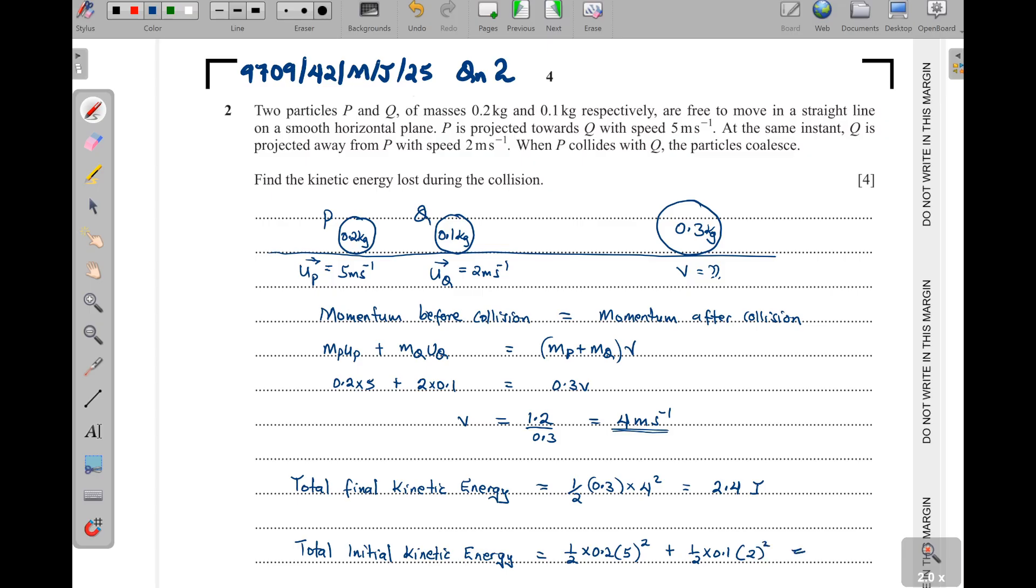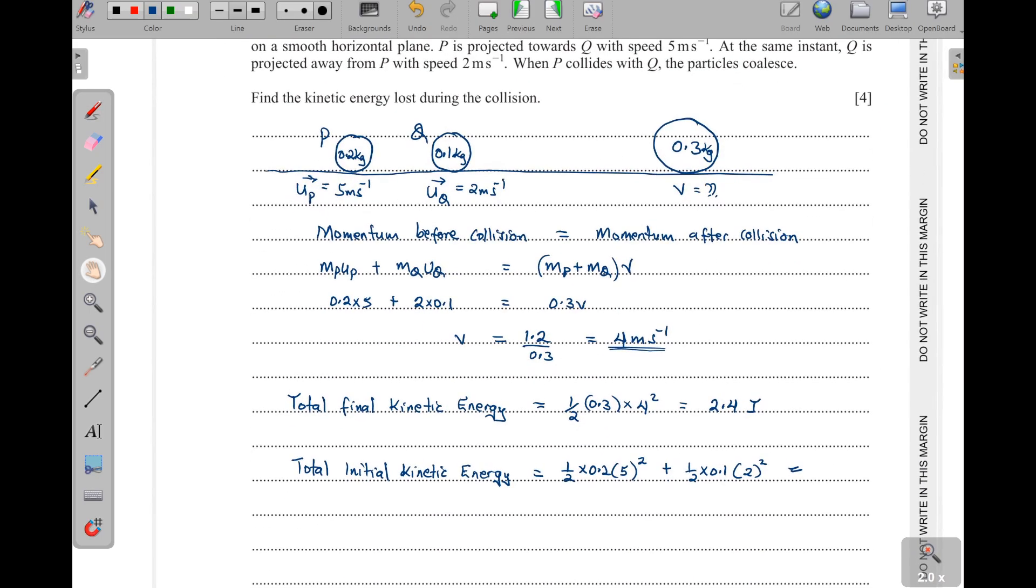So, all together here, what do we get? Now, first of all, this will be 0.1. So, 0.1 times 25, that will be 2.5. Then plus, what do we get here? 4 divided by 2, that is 2. 2 times 0.1, that will be 0.2. So, when we add this, I think we get 2.7.